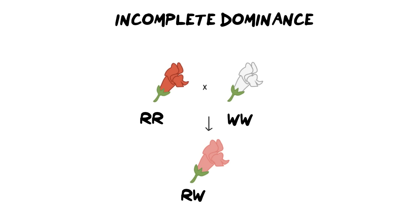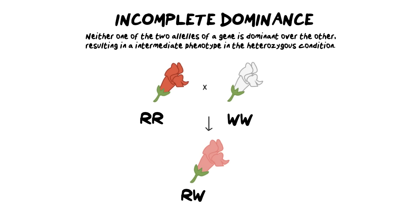The next type of dominance is incomplete dominance. You can already see the product is very different — when we cross two contrasting colors, we produce a third different color. The definition states that neither of the two alleles of a gene is dominant over the other, resulting in an intermediate phenotype. A beautiful example of this is with Snapdragon flowers. Let's have a look at the key so we know what to work with.